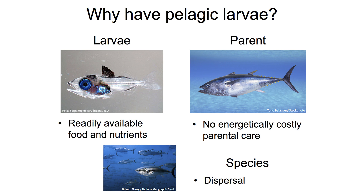So why would this be beneficial? In the pelagic zone, there are a whole bunch of nutrients readily available. The parent itself is free to not have to spend any energy on parental care. And overall, as a whole, the species can disperse very widely because the larvae end up so far away from the parents.